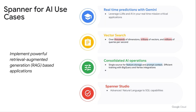With Spanner Studio, we want to democratize access to operational data. It empowers even non-technical users to interact with data through natural language — you can type a query in English and Studio will translate it to SQL to query the database. You can also use Spanner to consolidate your AI operations — instead of a special-purpose database for each use case, Spanner lets you consolidate and simplify your architecture. With Spanner AI, your applications become more intelligent, your data more versatile and valuable, and your business more competitive.